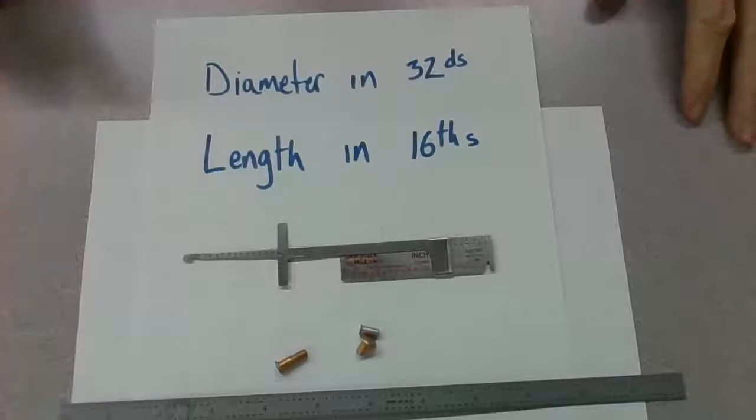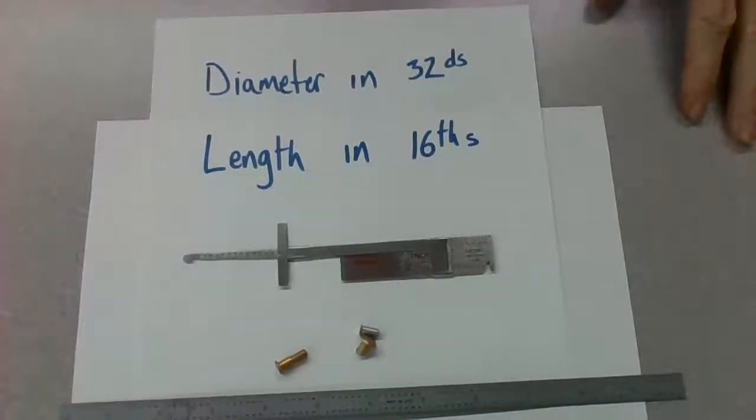So before, when we were working with call-outs for rivets, when we're looking at blueprint reading, if it had a 6 there, that would be 6 32nds for the diameter, and if it had a 6 at the very end, that means that it was 6 16ths of an inch long. And again, those fractions can obviously be reduced. 6 16ths would be 3 8ths of an inch, and 6 32nds would be 3 16ths of an inch in diameter.